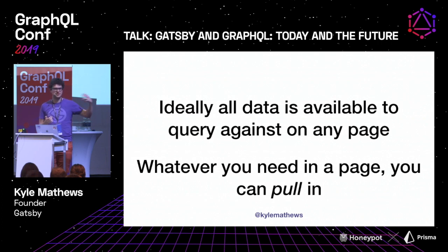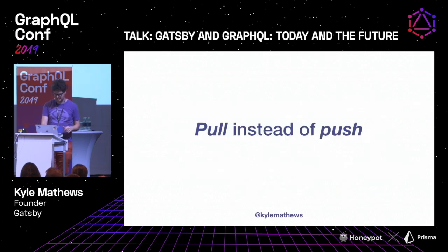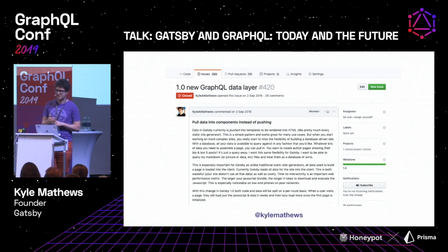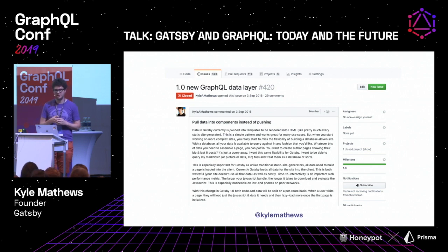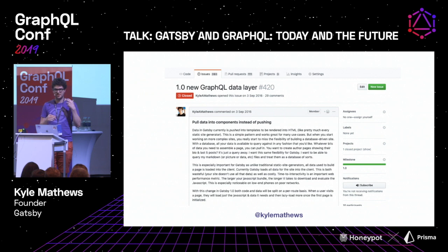Ideally, all the data you have is accessible for any page when you need it and you can just pull it in. As I was thinking about this problem and what a 1.0 would look like, that's when I settled on using GraphQL to drive this — because it solves that problem really neatly. It gives you a very nice query language to pull data out, treating whatever your data is like a database.